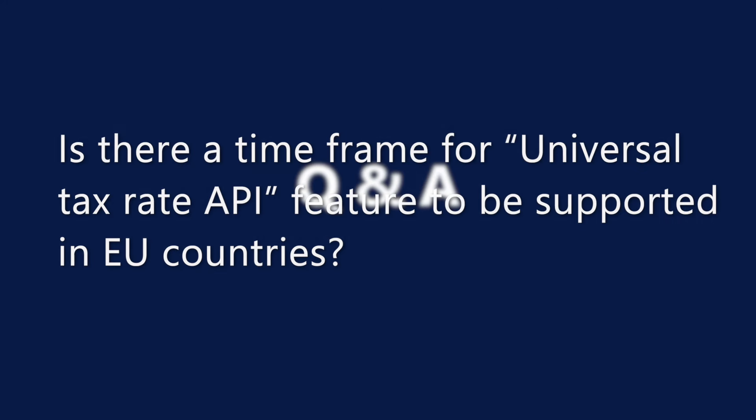Is there a timeframe for the universal tax rate API feature to be supported in EU countries? The roadmap is still under NDA so we cannot disclose it in this session, but EU countries are on our roadmap. What are the benefits of using an external tax service with the universal tax rate API versus an existing ISV solution that doesn't use the API? The universal tax rate API simplifies the integration of external ISV solutions, reducing potential issues when upgrading your system to newer versions, for new functionalities, new integrations, and additional country localizations. ISV solutions are also moving in this direction.